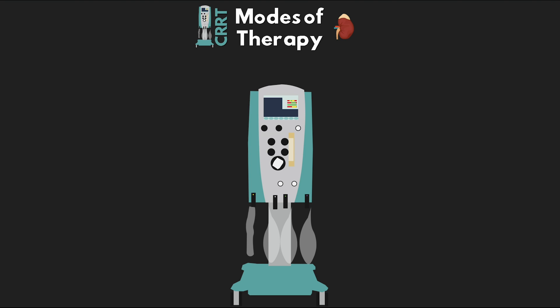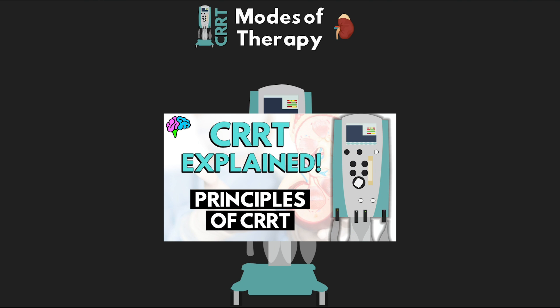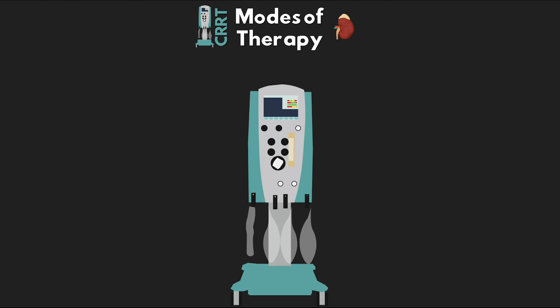In this next lesson, this is going to be the fourth lesson in this series on CRRT explained. We're going to be discussing the different modes or types of therapy that we can offer with CRRT. This should be a relatively short lesson. In the last lesson we talked about the principles of CRRT that guide our therapy and solute clearance — please watch that lesson first, as understanding those basic principles is really going to help you understand how these types of therapy work and differ from one another.